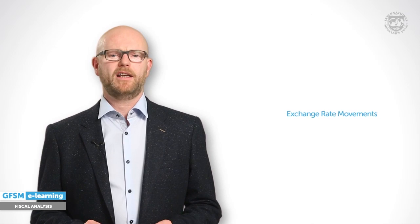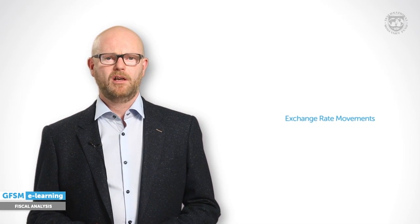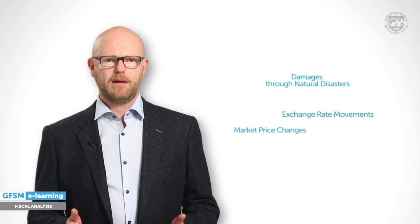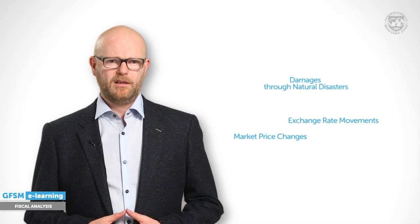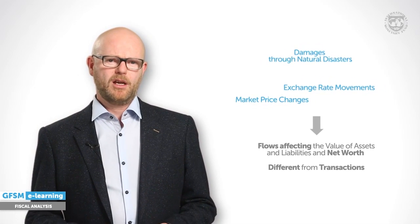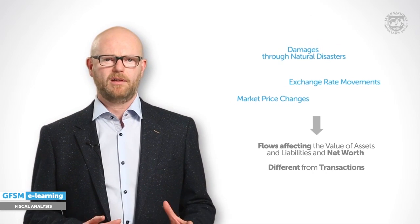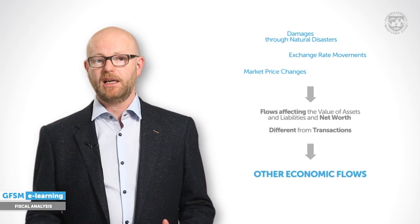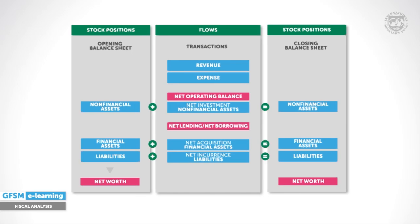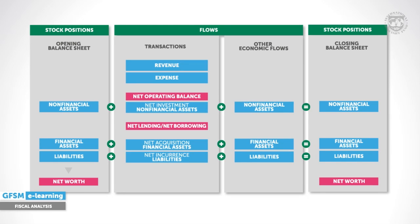The GFSM framework is almost complete. We only need to consider that stock values can also change by events other than transactions — think of exchange rates affecting the value of financial assets denominated in foreign currency, or market price changes for equities and bonds, or damages to non-financial assets such as the destruction of the road by an earthquake. Such flows affect the value of stocks and thereby net worth, but they are different from transactions because they don't result from interactions with another party. That's why GFSM records them separately as other economic flows, shown as a separate column of the framework.